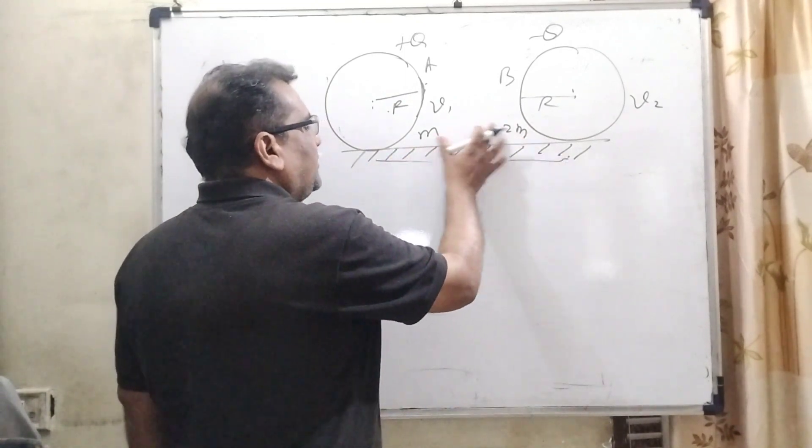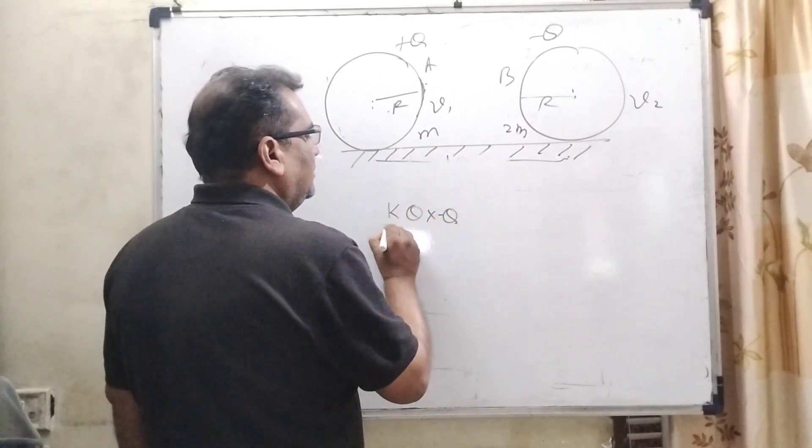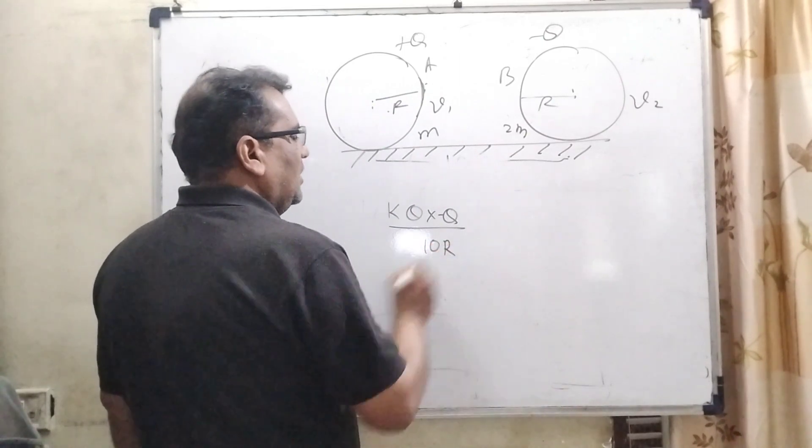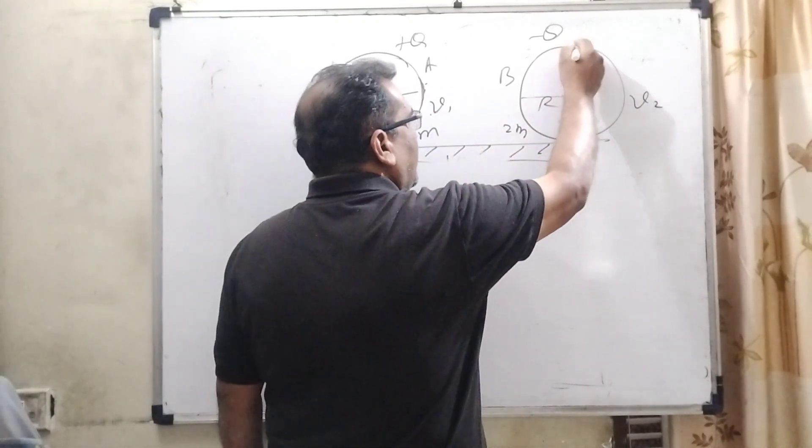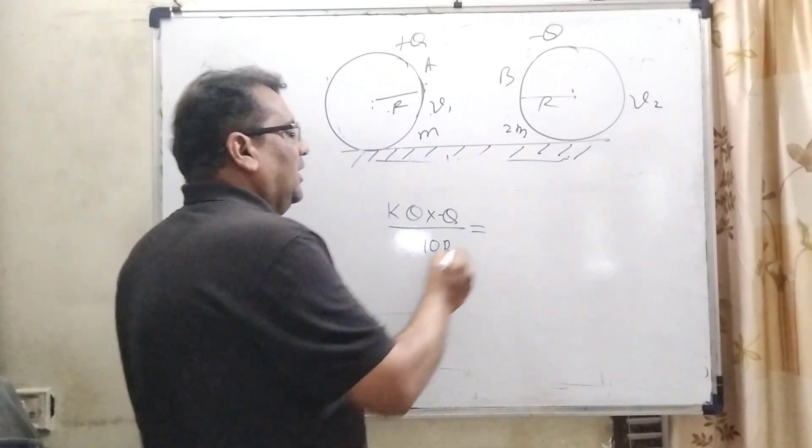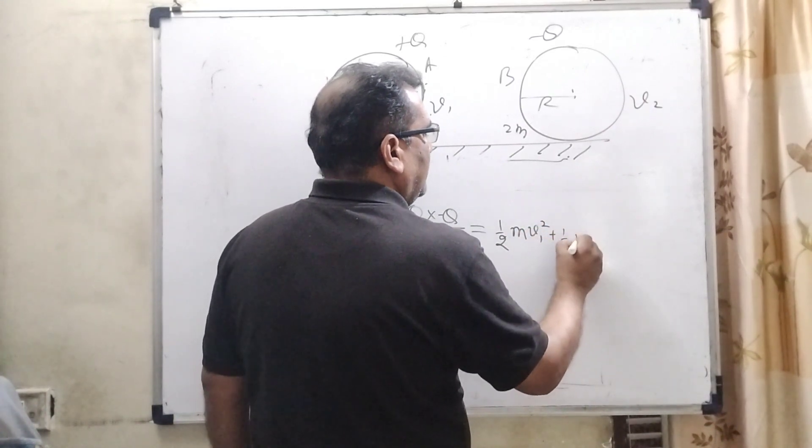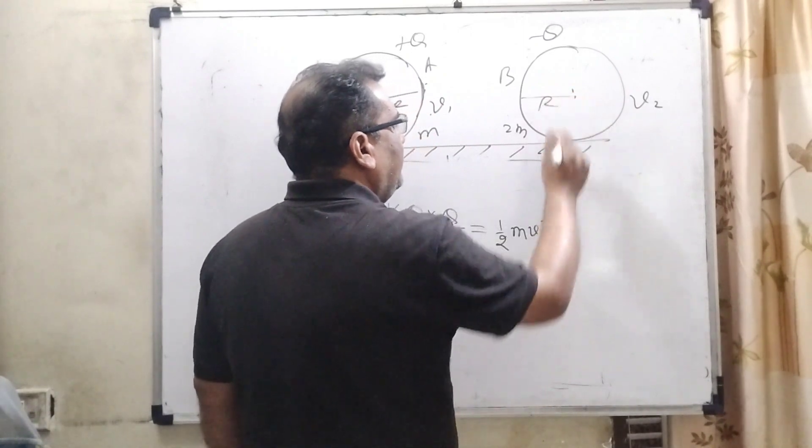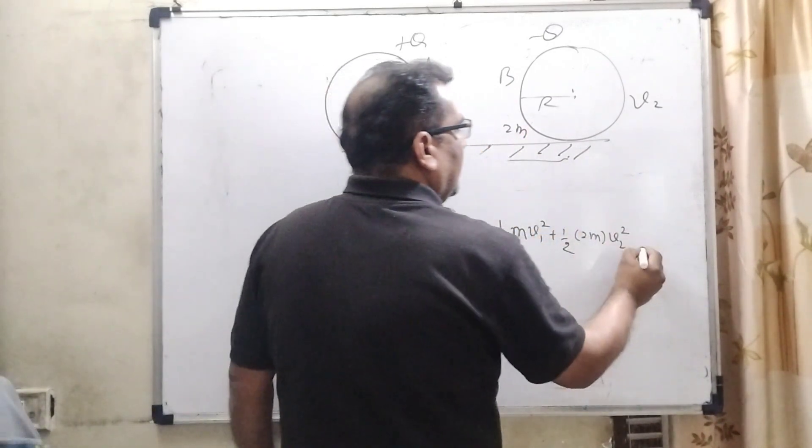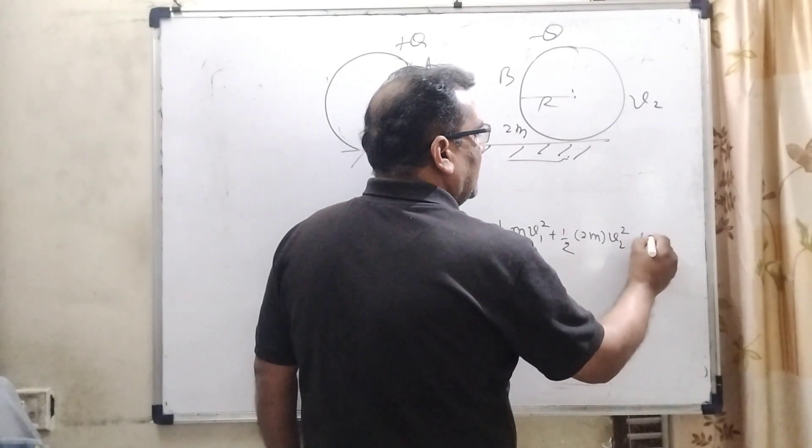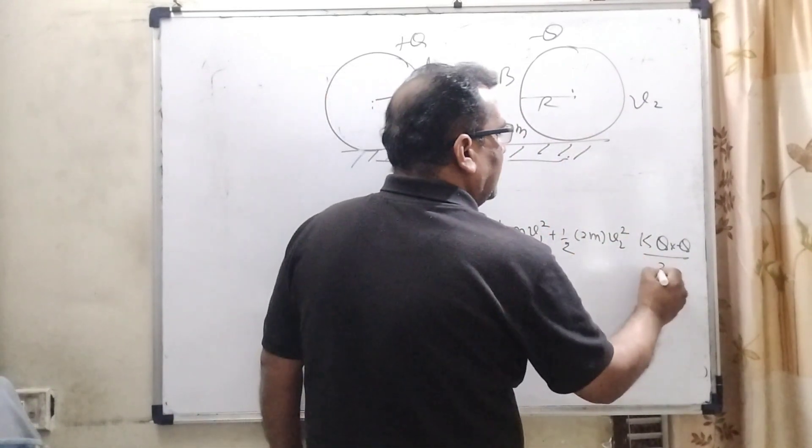Here, before releasing its potential energy is KQ and minus Q and the distance is 10R. And after releasing, then its velocity, kinetic energy, velocity is V1 consider and sphere B, its velocity is consider V2. Here, the kinetic energy becomes 1 by 2m V1 square, 1 by 2 and mass of this sphere B is 2m and velocity is V2 square. And when they stick together, then potential energy becomes K here, Q and minus Q and the distance this R and this R become 2R.